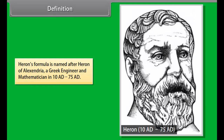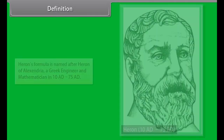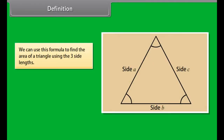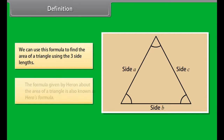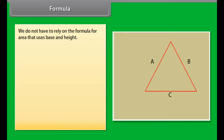Heron's formula is named after Heron of Alexandria, a Greek engineer and mathematician in 10 AD to 75 AD. We can use this formula to find the area of a triangle using the three side lengths. The formula given by Heron about the area of a triangle is also known as Heron's formula.